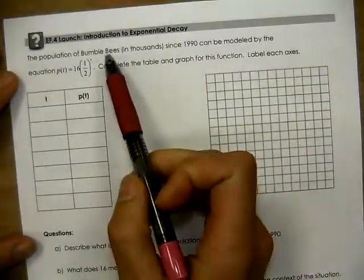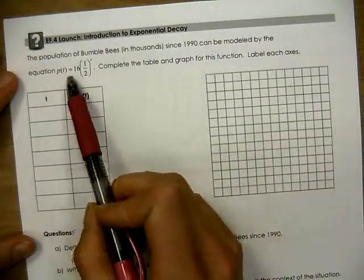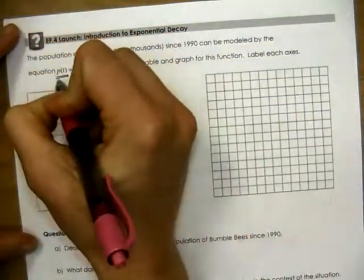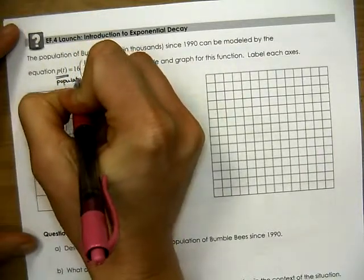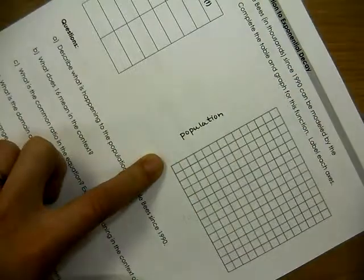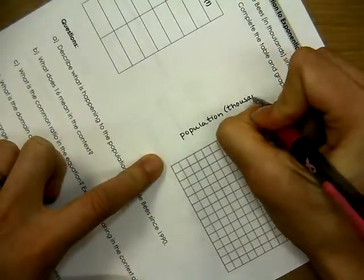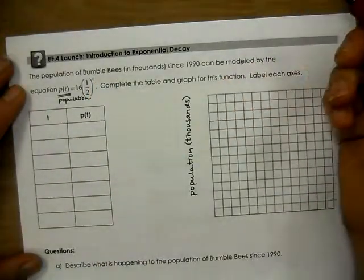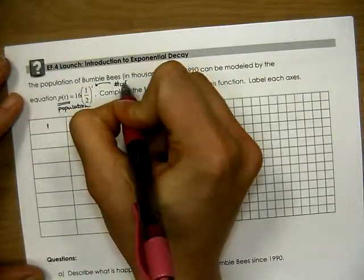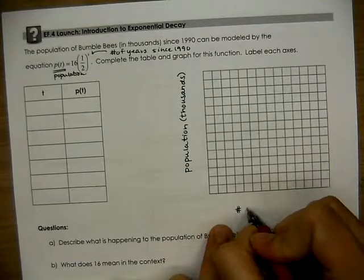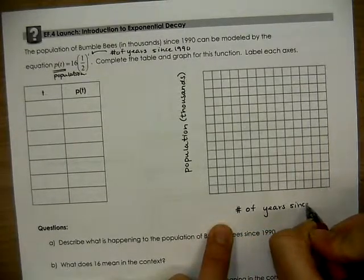All right, now that you've had some time to do that, let's go ahead and talk through this together. It says the population of bumblebees in thousands since 1990 can be modeled by the equation blank. Complete the table and graph for this function and label each axis. So when we look at this we have p of t and t. So p is the population — that's going to be labeling my y-axis — population in thousands. And t represents the number of years since 1990.